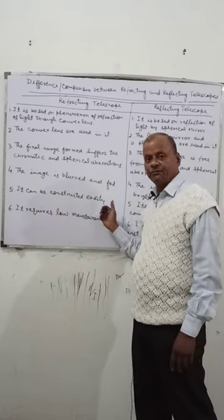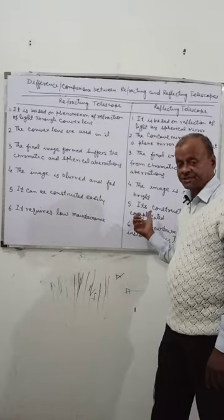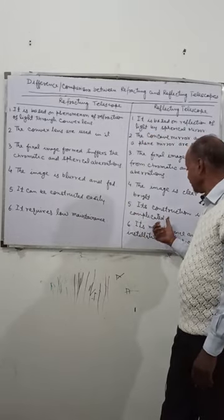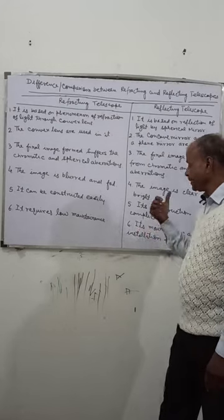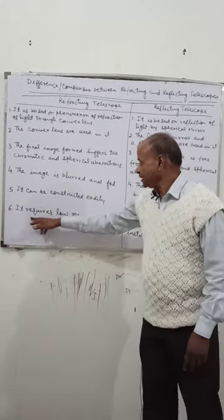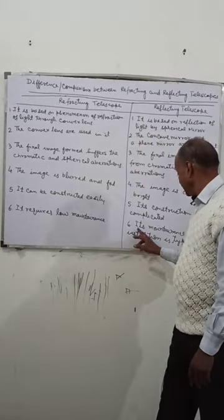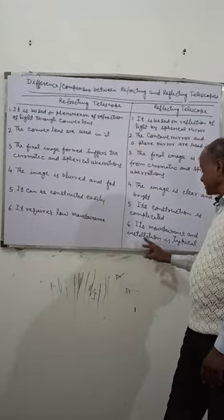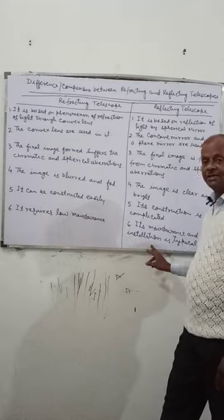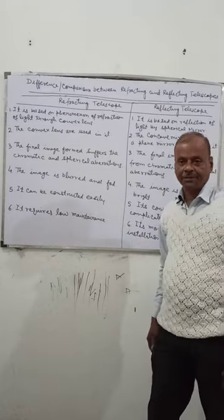The refracting telescope can be constructed easily, while the construction of the reflecting telescope is typical and complicated. The reflecting telescope requires a long tube, and its maintenance and calibration is difficult.